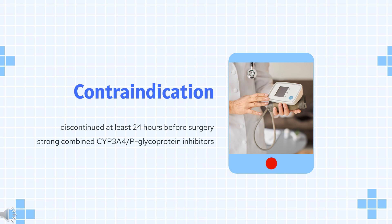Contraindications: Because of the difficulty associated with managing bleeding, Rivaroxaban should be discontinued at least 24 hours before surgery, then restarted as soon as adequate hemostasis is established. Dosing recommendations do not recommend administering Rivaroxaban with drugs known to be strong combined CYP3A4/P-glycoprotein inhibitors, because this results in significantly higher plasma concentrations of Rivaroxaban.